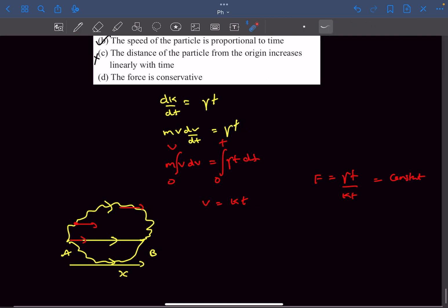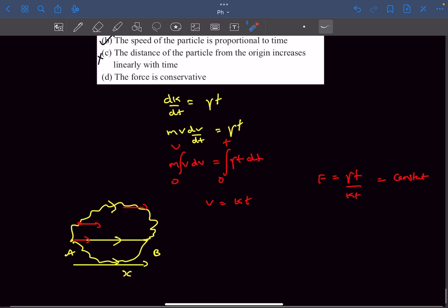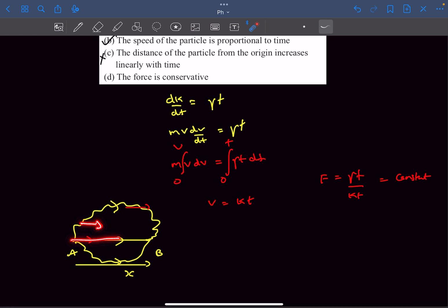The work done by this force F along this path will be the force multiplied by the displacement in the direction of force. So that will always be F multiplied by the distance AB. So irrespective of the path taken, the work is coming out to be the same along all the paths connecting point A and point B, which means F is a conservative force and option D will also be correct.